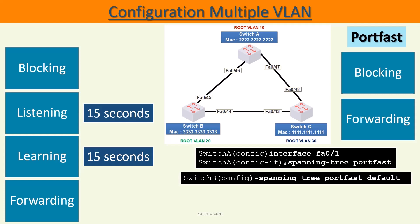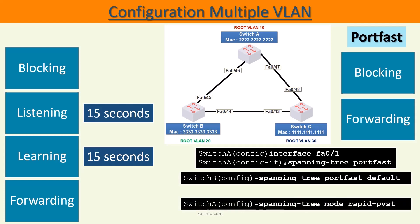The last thing to see in Spanning Tree is the implementation of Rapid Spanning Tree. At this point, it is not necessarily important to see in detail how it works, but just how to activate it. The command 'spanning-tree mode rapid-pvst' simply enables it, and convergence will then be much faster.